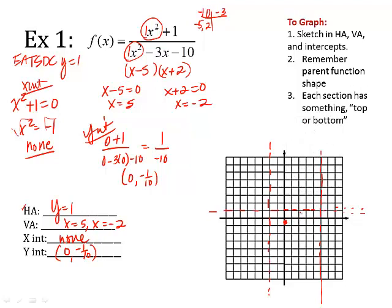Y-intercept, 0, negative 1/10. Well, it's just barely under the x-axis, but it's there. Now, remember the parent function. This one's different because it has three sections. There's section A, section B, section C. You can see they're divided by the asymptotes. And we have a top and bottom of each section.